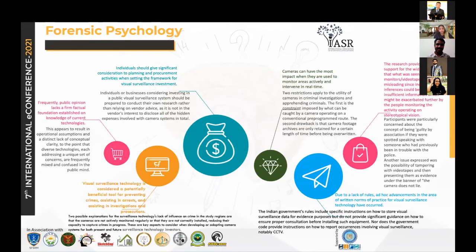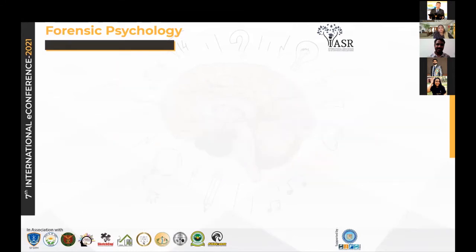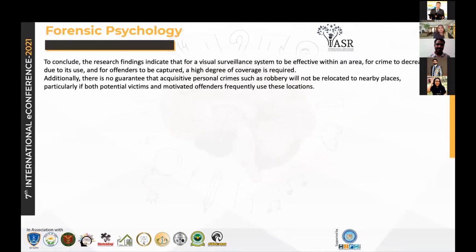The research provides more support for the widely held belief that what is seen on CCTV monitors or videotapes can be misleading. A large portion of the population believes this technology is not neutral at all, and stereotypical biases while looking at monitors or surveillance data can affect judgment significantly. The research findings indicate that for a visual surveillance system to be effective in reducing crime and capturing offenders, a high degree of coverage is required. Additionally, there is no guarantee that personal crimes like robbery will not be relocated — robbers simply shift to places with fewer or no cameras.